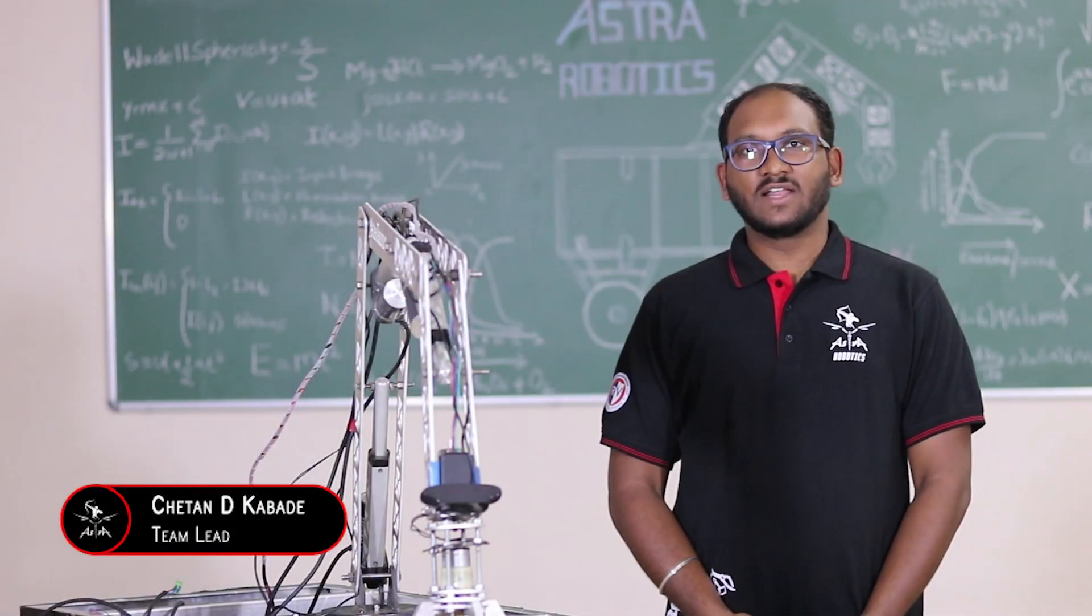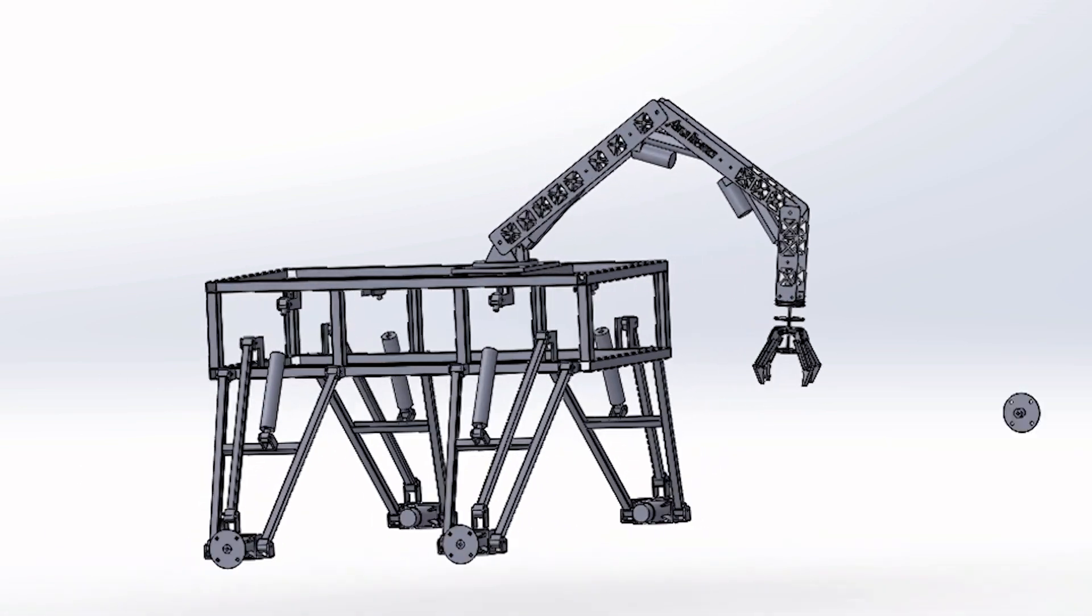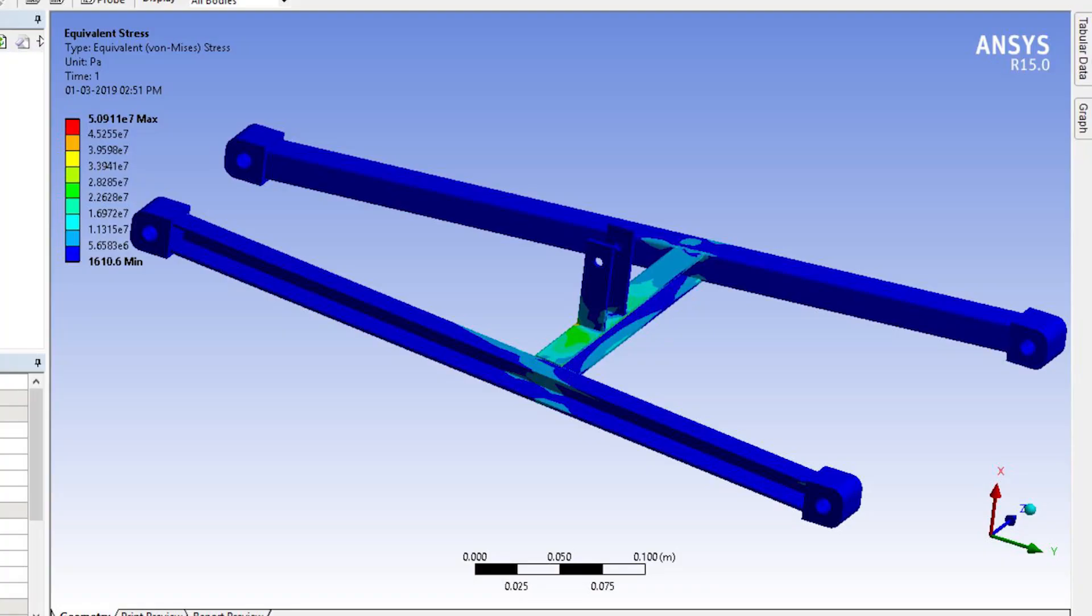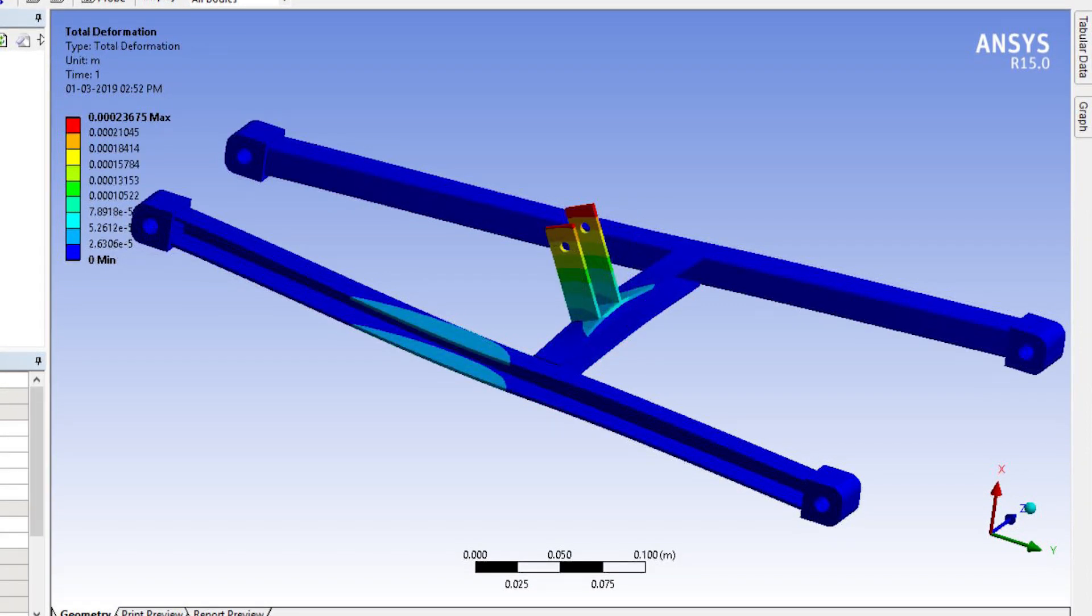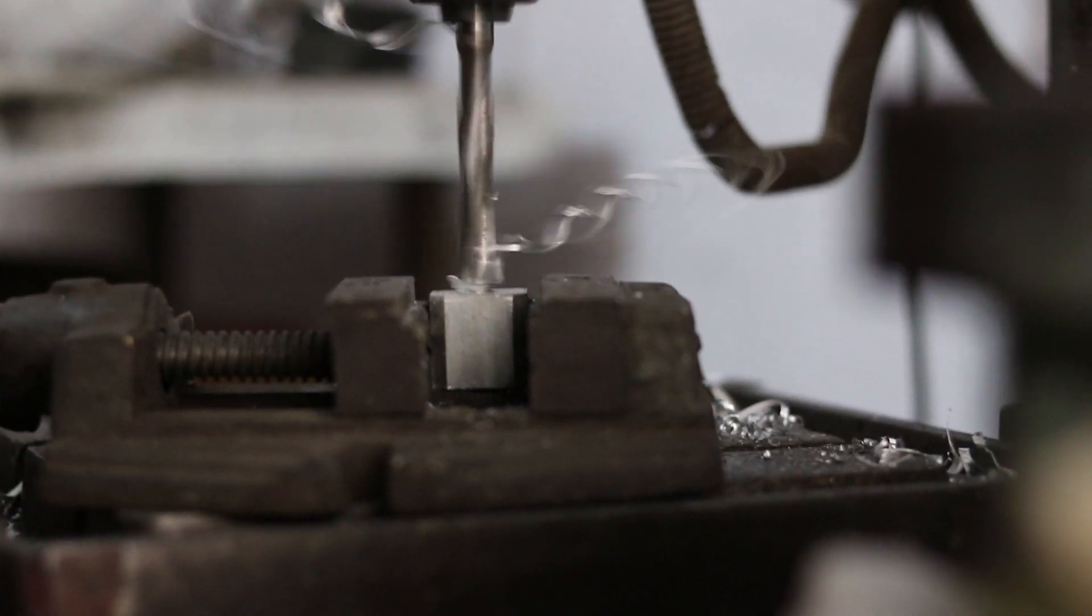After considering various geometries, we concluded that the H-Arm with camber link was best suited for the rigorous conditions of URC. Also, the camber link helps in withstanding any lateral loads acting on the wheels. The design was fabricated using 6000 series aluminum to significantly reduce the weight.